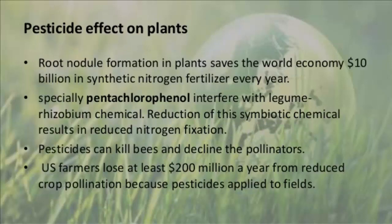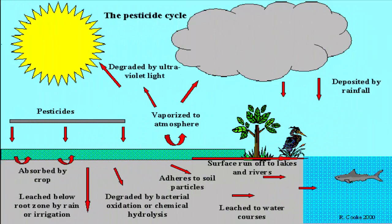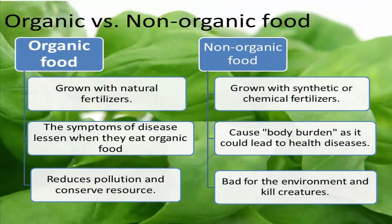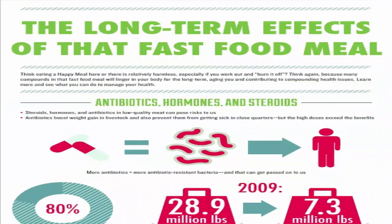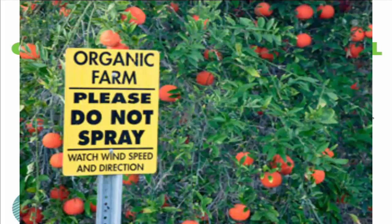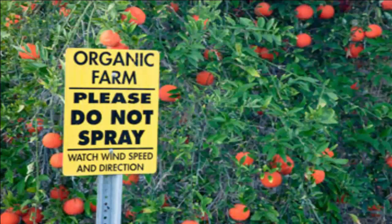So overall, we should not use chemically grown or conventional inorganic food at all. As its usage decreases, the demand will decrease, and eventually its production will also reduce — and the direct benefit of that will come to us.